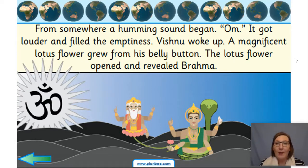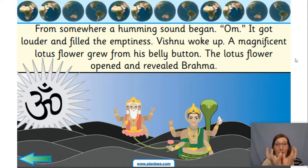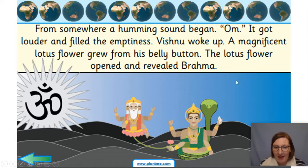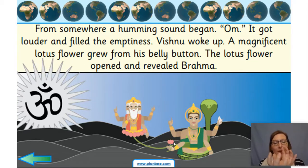From somewhere, a humming sound began - Om. It got louder and filled the emptiness - Om. Vishnu woke up, a magnificent lotus flower grew from his belly button, and the lotus flower opened and revealed Brahma. How amazing! Can you see there? The lotus flower is coming from his belly button and up and there is Brahma. This is the beautiful lotus flower, and lotus flowers are often a symbol in Hinduism - they open up and they're very, very beautiful.